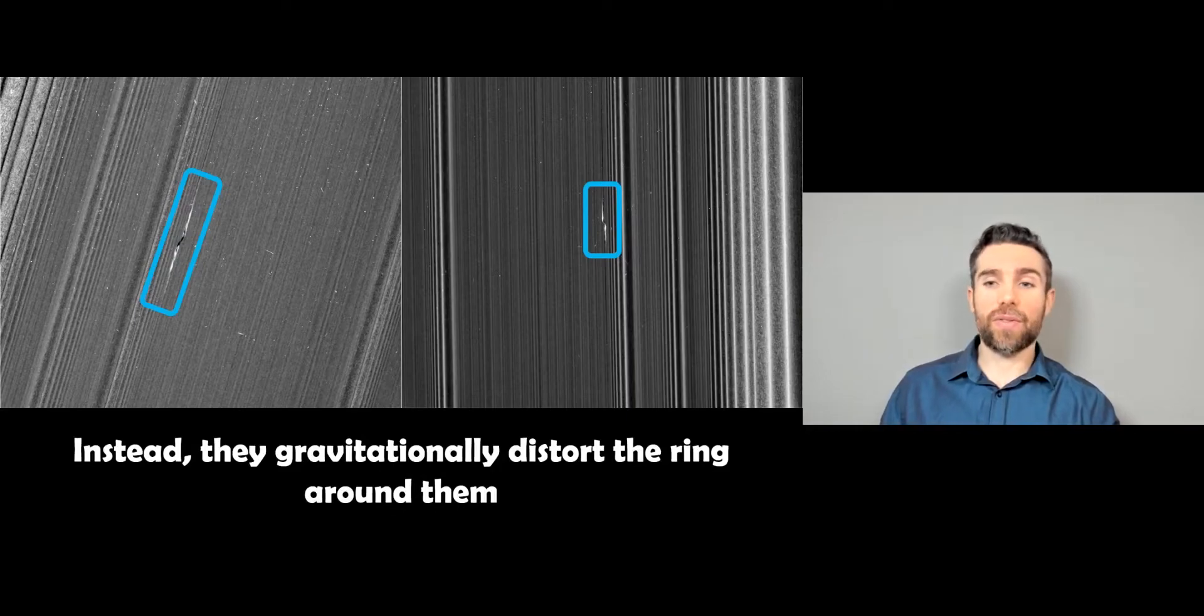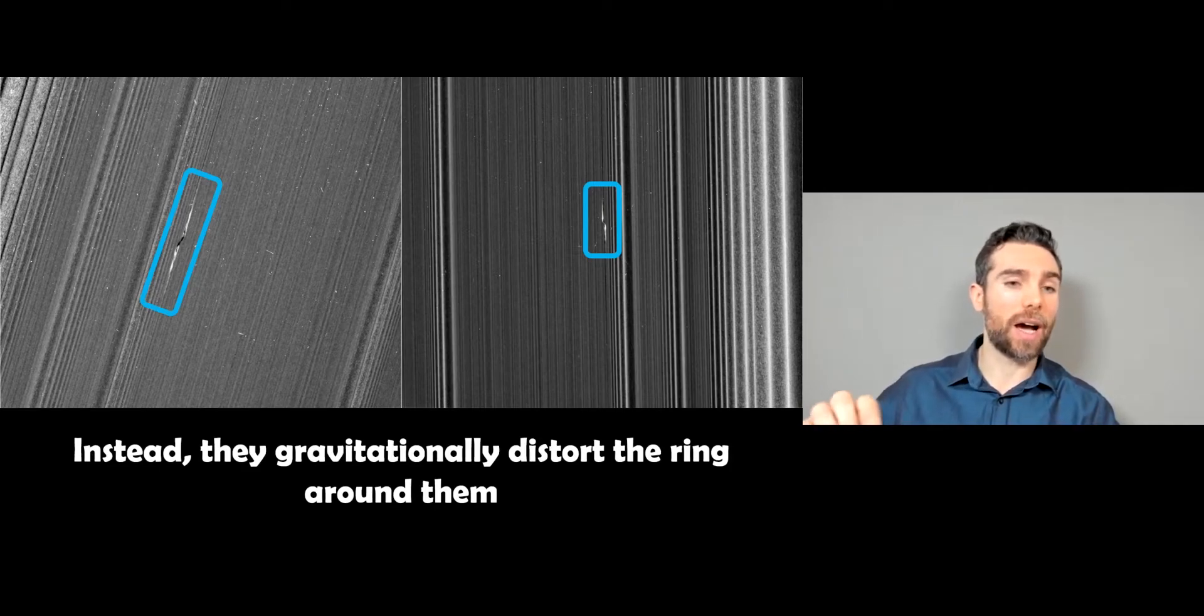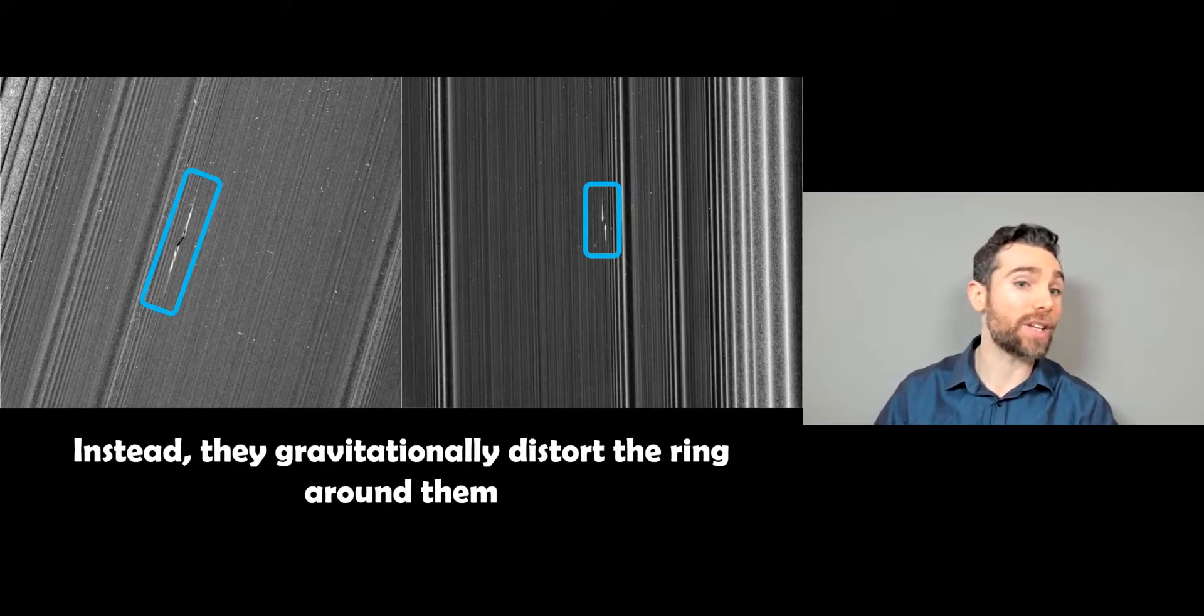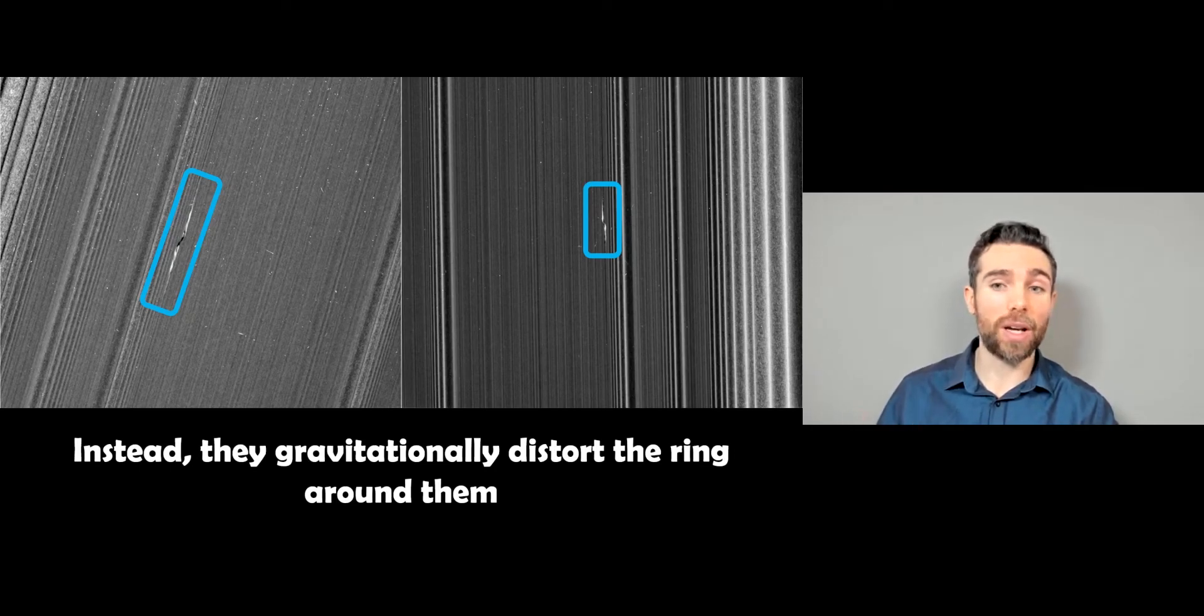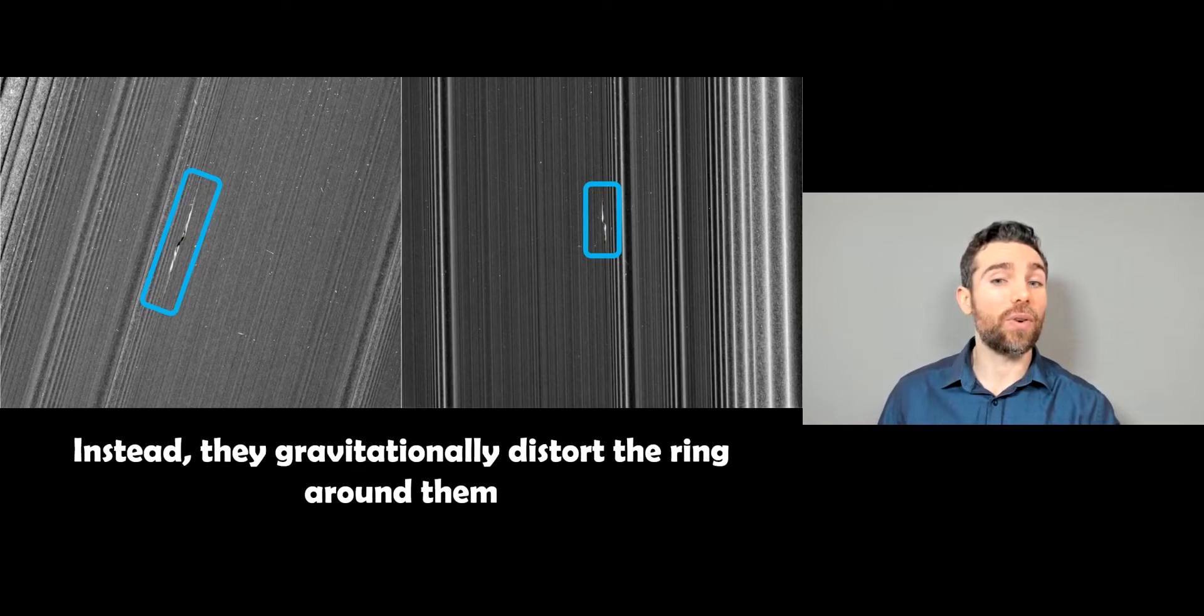Now, instead of creating this gap, they just do a localized distortion around them. So if you have a look, that propeller-like structure in the center is where the moon is. And then you have these kind of propeller arms coming out from that in the direction that it's actually orbiting. And you've got a few examples here. There's actually quite a few examples in the rings. But this is quite characteristic of a small object, around 100 meters sort of size, in the rings, and the sort of structures that they actually form.